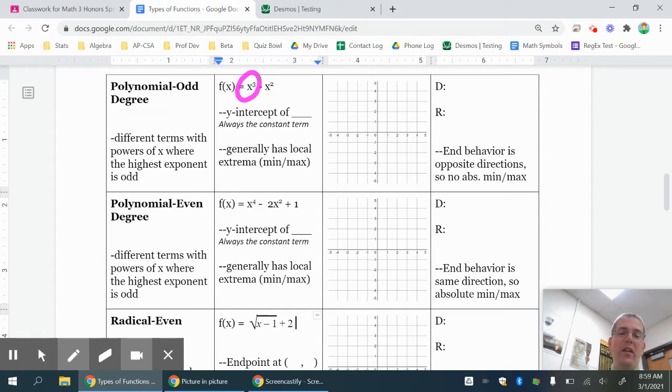Now my y-intercept is the constant term, the term on the end, so this time I have nothing on the end, so it's like a plus zero. So that means a y-intercept of zero since there was no visible constant term. The constant term is zero.